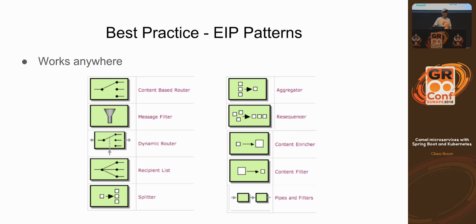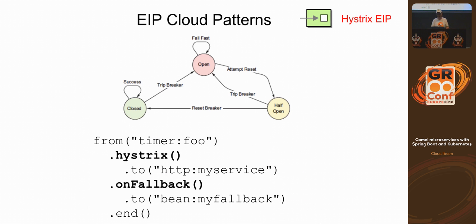Do enterprise integration patterns work in the cloud as microservices? Yes — those patterns are universal. The Enterprise Integration Patterns book was written before cloud and containers, but the patterns work just the same today. Regarding the thundering herd problem, there's a pattern for that — the circuit breaker pattern. A famous Java implementation is Hystrix from Netflix, which is heavily used to protect services. Camel has out-of-the-box support for Hystrix.